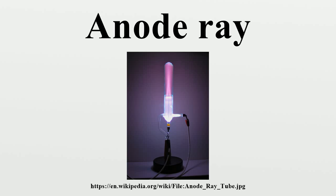Colliding ions knock electrons off atoms, creating more positive ions. These ions and electrons in turn strike more atoms, creating more positive ions in a chain reaction. The positive ions are all attracted to the negative cathode and pass through the holes in the cathode. These are the anode rays.